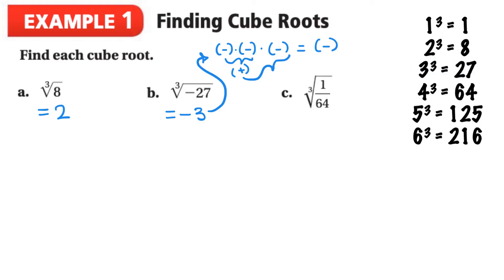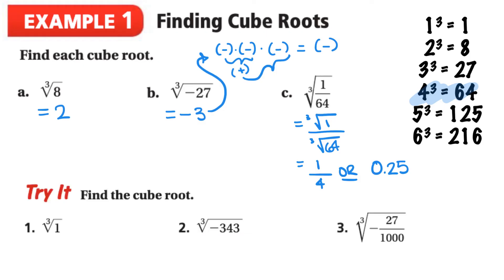In letter C we've got a fraction, the cube root of 1 over 64. Just like we did when we had square roots and fractions, we could take the cube root of the numerator and the cube root of the denominator. So the cube root of 1 is going to be 1, and the cube root of 64, if we look down in our chart right here, is going to be 4. So then we've got 1 over 4, or if you wanted to give this as a decimal, 0.25. Let's take a moment to pause the video to try out these three questions.